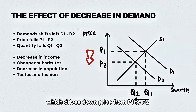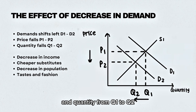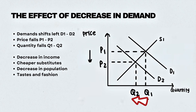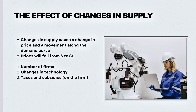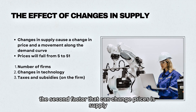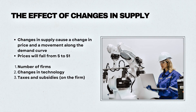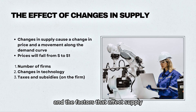Decreasing demand is when demand shifts from D1 to D2, which is a contraction of the supply curve, and this drives down price from P1 to P2 and quantity from Q1 to Q2.